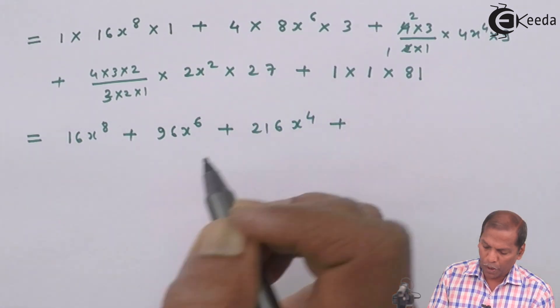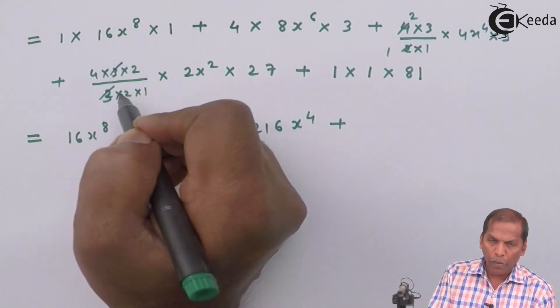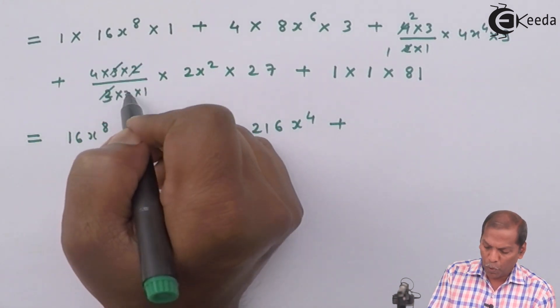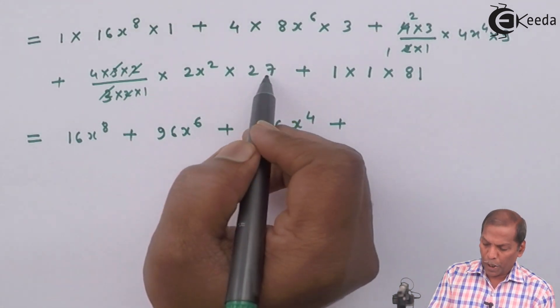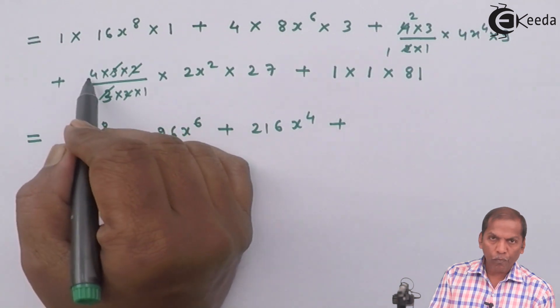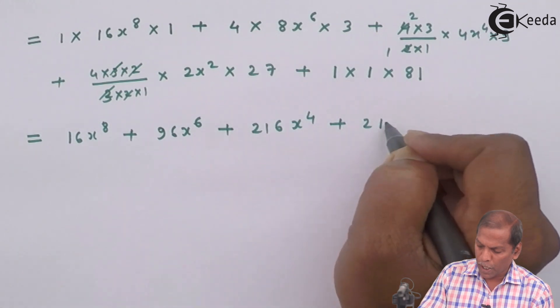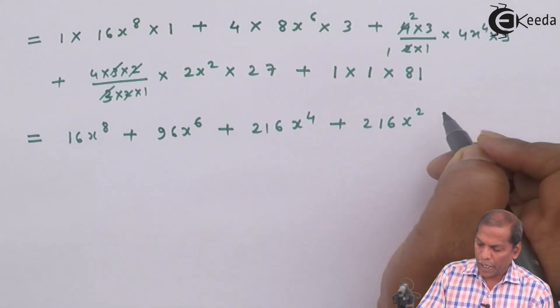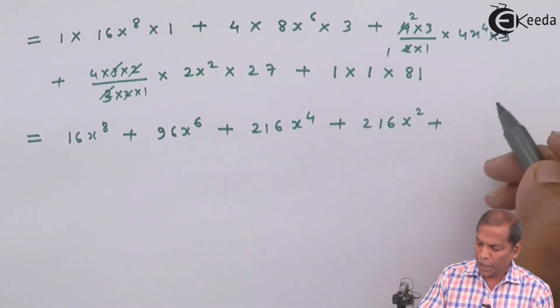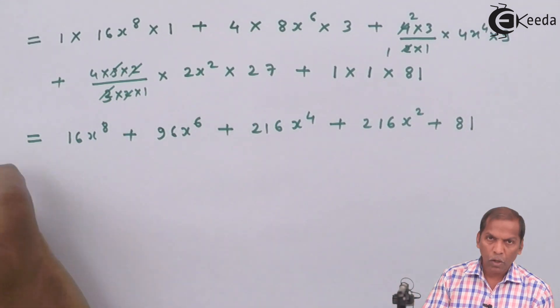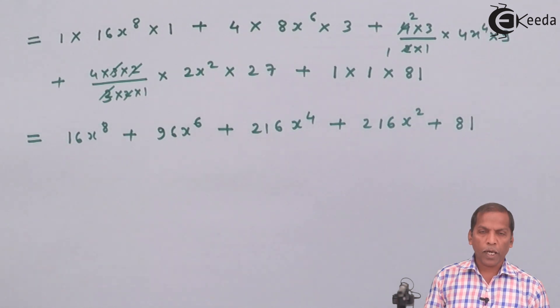here we cancel 3 from numerator and denominator, 2 from numerator and denominator, and the remaining term is 27 times 4 that is 108 times 2, so that is 216x² plus 1 times 1 times 81, so that gives 81. So this is the required solution for the given problem. Thank you.